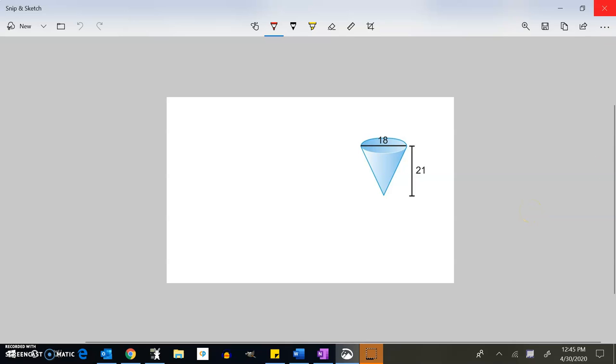Well, let's go ahead and find volume and surface area of this shape. And notice that this diameter is 18, so that means the radius is half of that. The radius must be 9.